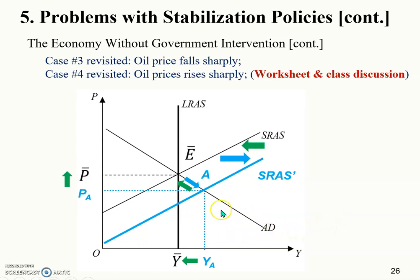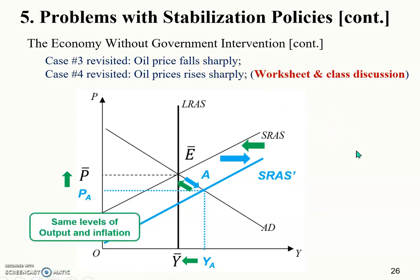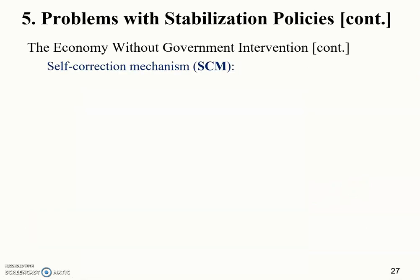You can see the difference between case two and case three. Following the same logic, you're encouraged to finish case number four by yourself. In this case, comparing the original situation E-bar and the final situation — also E-bar — it's exactly the same point. Output and the price level remain exactly the same; there is no difference at all.